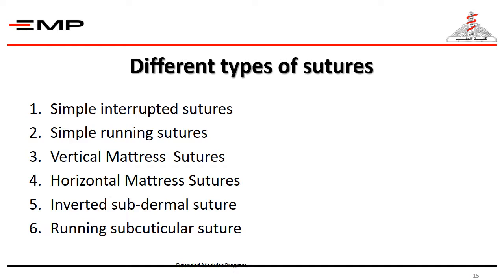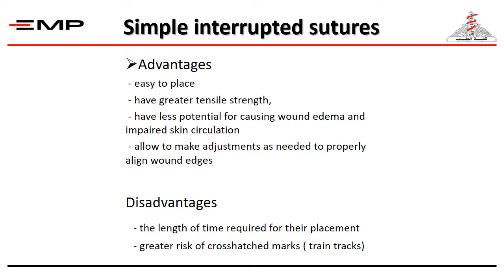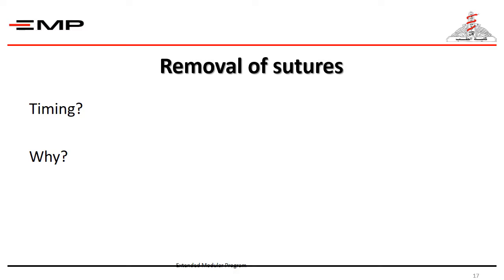There are different types of suture techniques, like simple interrupted sutures, simple running sutures, vertical or horizontal mattress sutures, inverted subdermal suture, and running subcuticular sutures. However, in this instance, we are going to concentrate on the most simple and important technique, which is simple interrupted sutures. Simple interrupted sutures have many advantages: they are easy to place, have greater tensile strength, have less potential for causing wound edema and impaired skin circulation, and allow adjustments as needed to properly align wound edges. Disadvantages include the length of time required for placement, unlike continuous suturing, and a greater risk for cross-hatched or railway marks if sutures are not removed in the appropriate time.